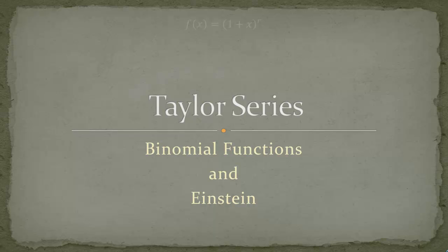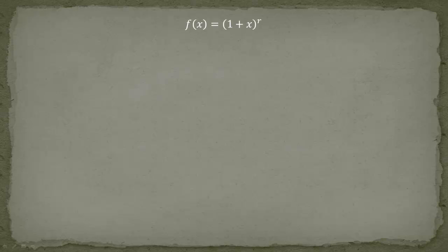What are binomial functions? The simplest case looks like this: (1 + x) to the r. This is our function and we want to find the Taylor series for it. In previous videos I used some tricks like integrating the geometric series, but now I want to stick to the normal procedure. Since we evaluate at x equals 0, this is technically the Maclaurin series, but I'll just call it the Taylor series.